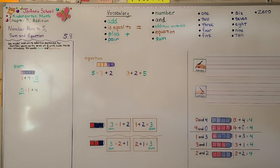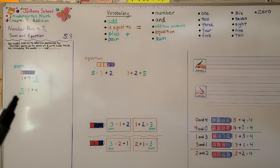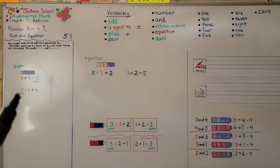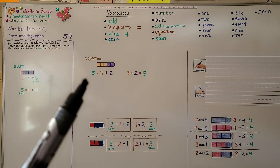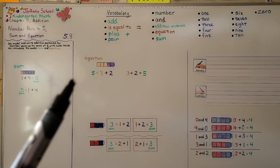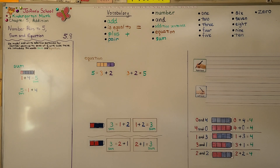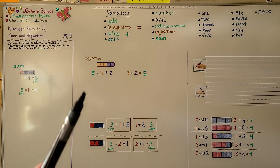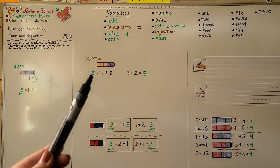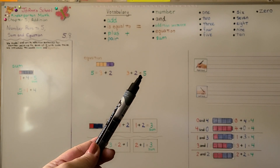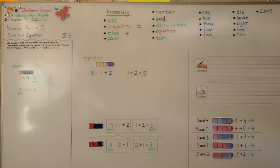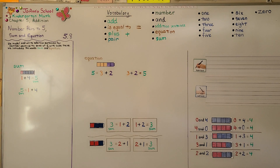Remember, we can call the number in all the total, or we can call it the sum — that's the answer to an addition problem, an addition equation. An equation is a number sentence. We can write the sum to the left of the equal sign, or we can put the equal sign and write the sum on the right side.